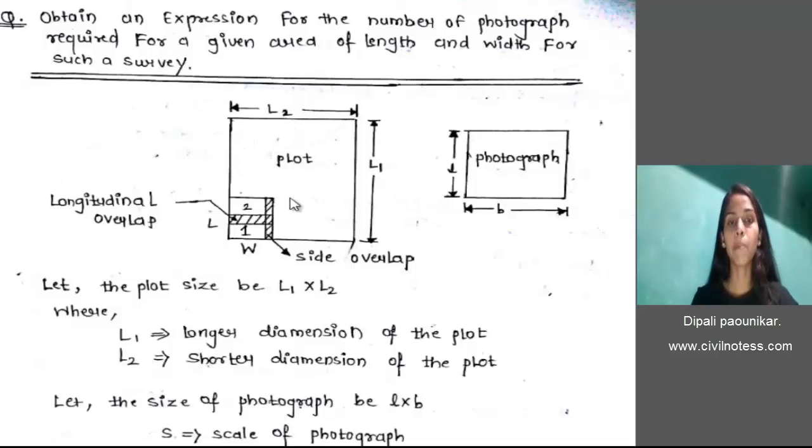Now, I have one plot, the plot size be L1 into L2, and on the other side, I have a photograph. The photograph size be L into B. In this plot, there are two types of overlap. One is longitudinal overlap.